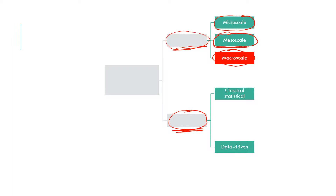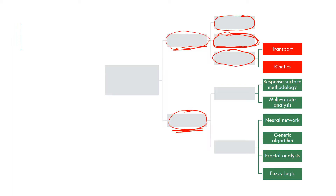An example of a mesoscale model is the lattice Boltzmann model, and a micro scale model can be a molecular dynamics simulation. The macro scale models are further made up of transport models and kinetics models, and this is where most of our interest lies.